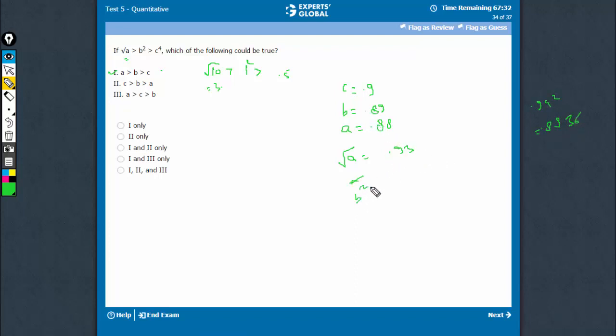B square would be 0.89 into 0.89, something like 0.8 or something. And C raised to power 4 would be 0.9 square would be 0.81, 0.81 square would be 0.64 something. So originally C is greater than B is greater than A, but values of these are in the order suggested here.